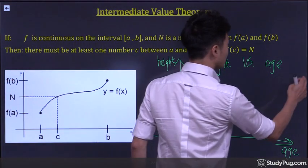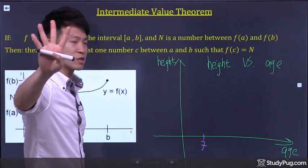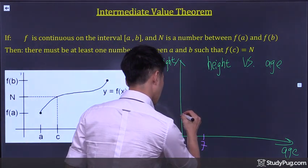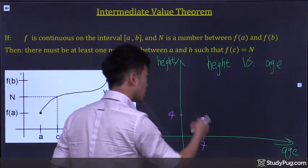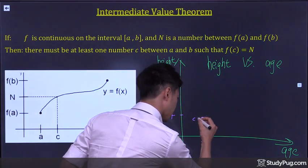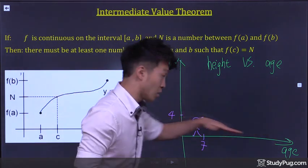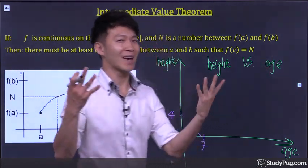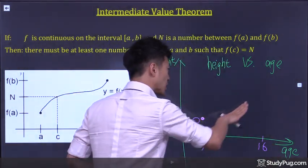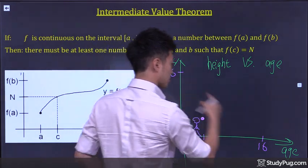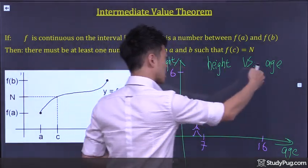Now let's say at the age of 7, you were 4 feet tall. So your height was 4 feet tall. And as time went by, you grew taller and taller. And let's say at the age of 16, you grew to be 6 feet tall.